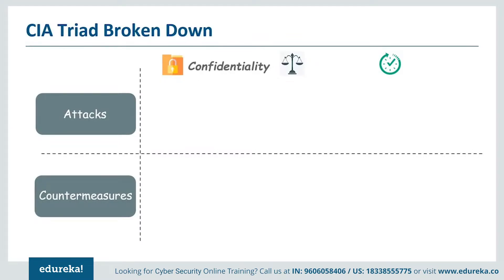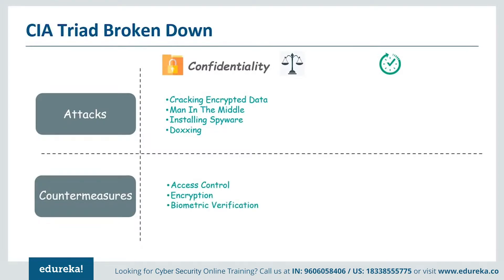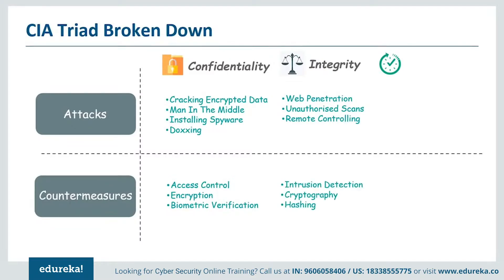Confidentiality attacks include cracking poorly encrypted data and employees knowingly or unknowingly putting sensitive data on removable media such as SD cards and pin drives and giving it to unauthorized parties. There is also doxing — leaking private information about an individual or organization to do harm. The best way to keep information secret is to enforce strict access control and to encrypt any data being transmitted. Integrity attacks include penetrating a web server to embed malware, maliciously accessing a financial server to falsify records, or turning a machine into a zombie computer to be controlled remotely. The best way to uphold integrity is to use cryptography and ensure intrusion detection.